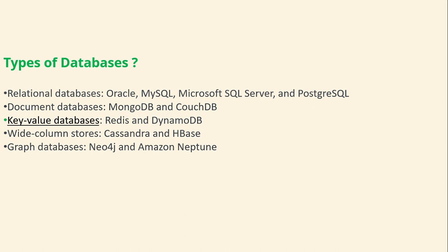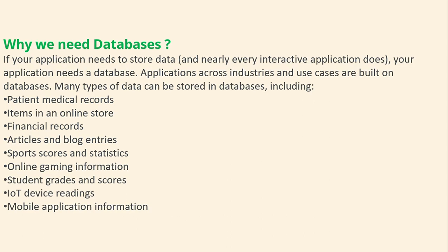There are different types of databases. Relational DBMS examples include MySQL, Oracle, Microsoft SQL Server, and PostgreSQL. Document-based databases include MongoDB and CouchDB. Key-value databases include Redis and DynamoDB. Wide-column stores include Cassandra and HBase. Graph databases include Neo4j and Amazon Neptune.